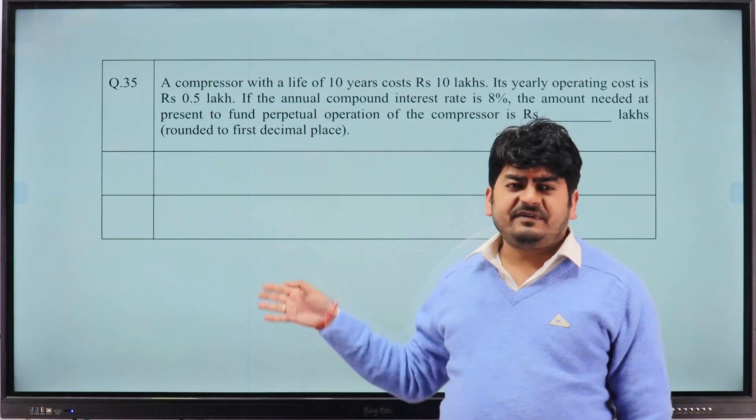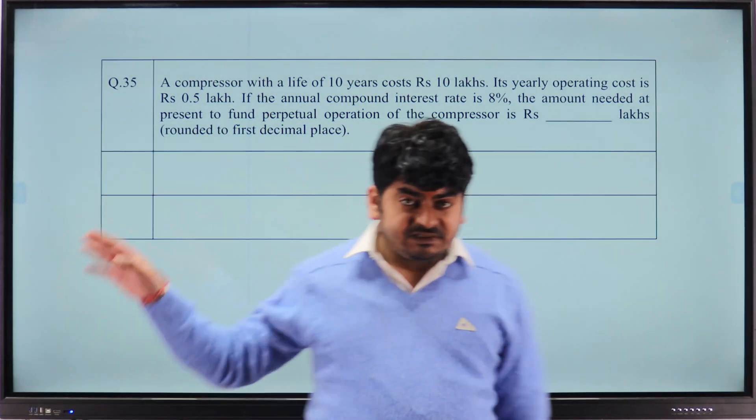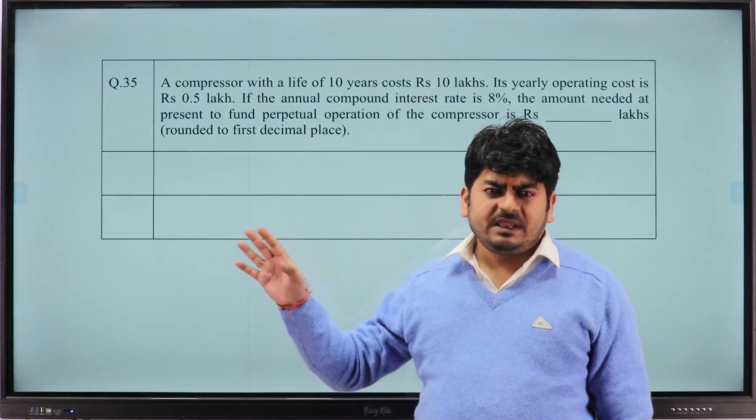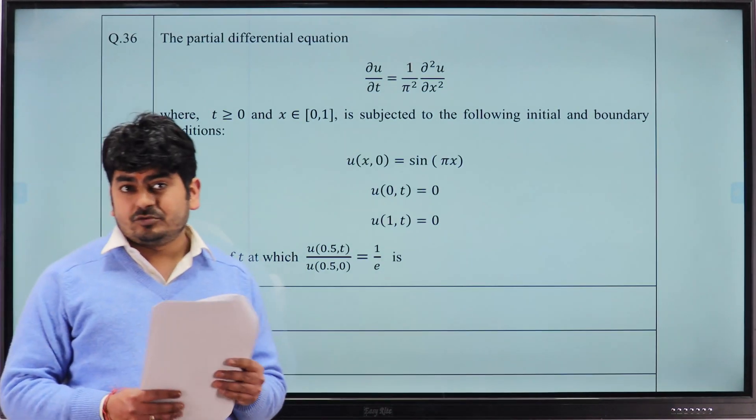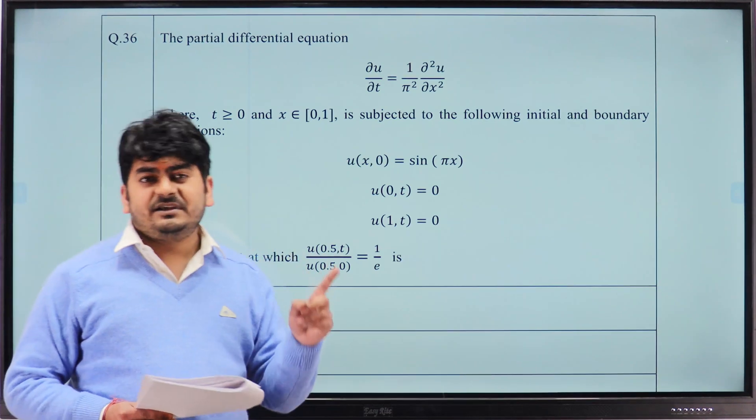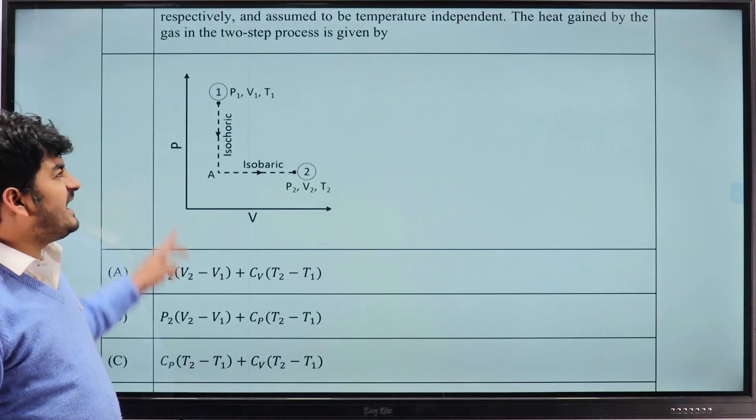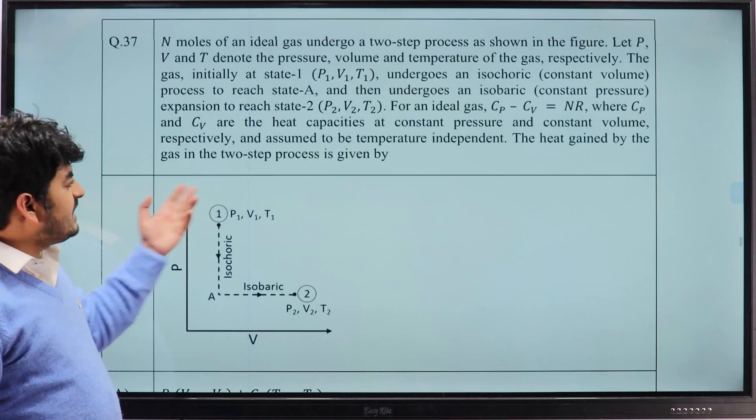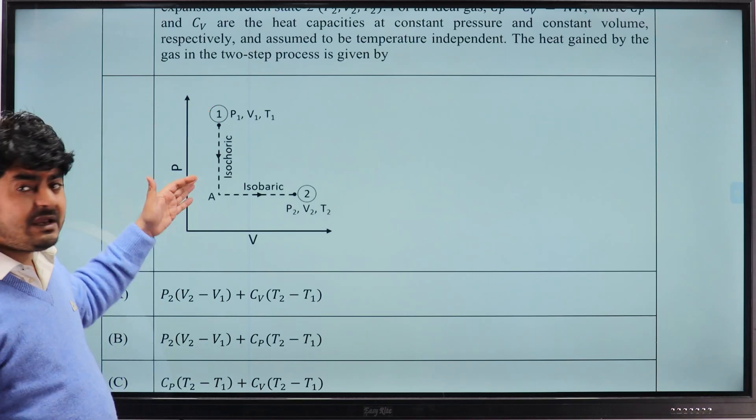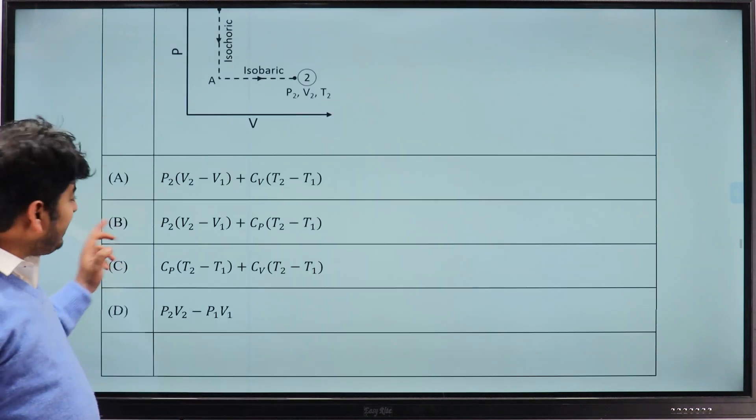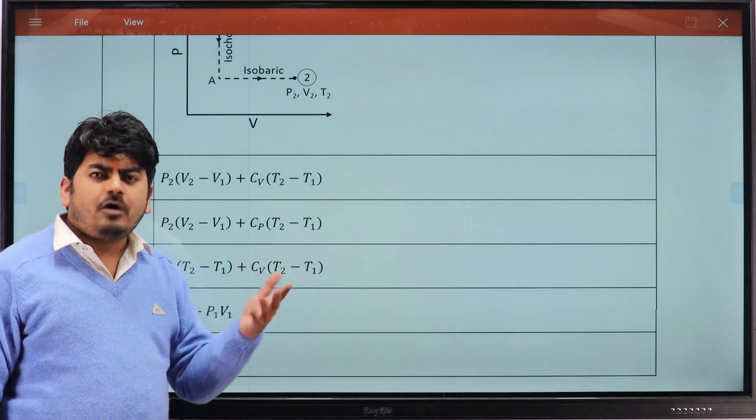For question 36 from heat equation in mathematics, our faculty is saying that he will discuss with you tomorrow live and the correct answer is 1. He will share the detailed solution with you, so option A, 1 is the correct answer. For this question, now this question from thermodynamics, very, very easy. You have to calculate the total heat required, and total heat will be the sum of heat in process work path 1 to A plus process path A to 2. So option A will be the correct answer: P2 times V2 minus V1 plus CV times T2 minus T1. How that, we will see tomorrow.